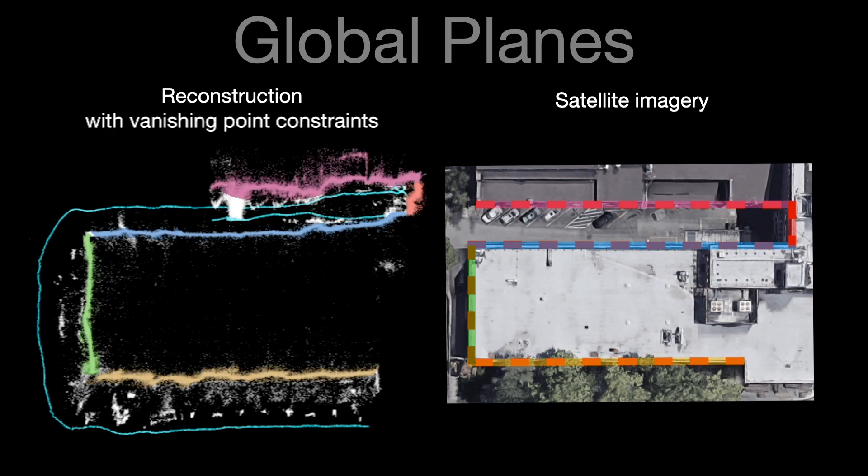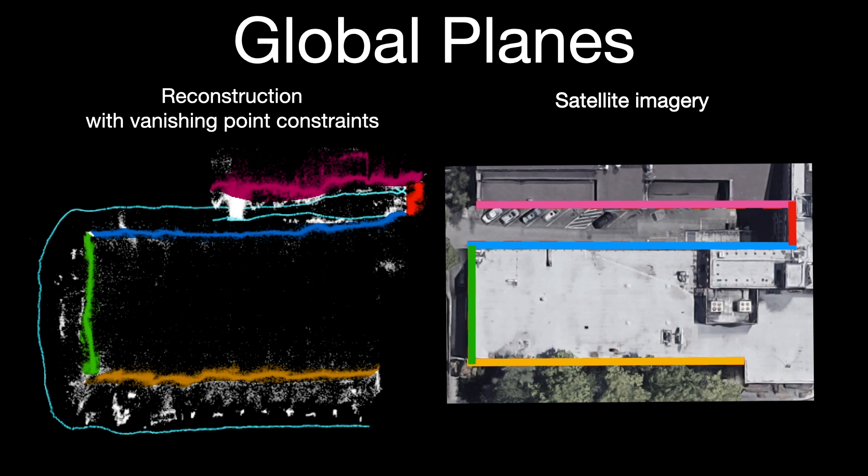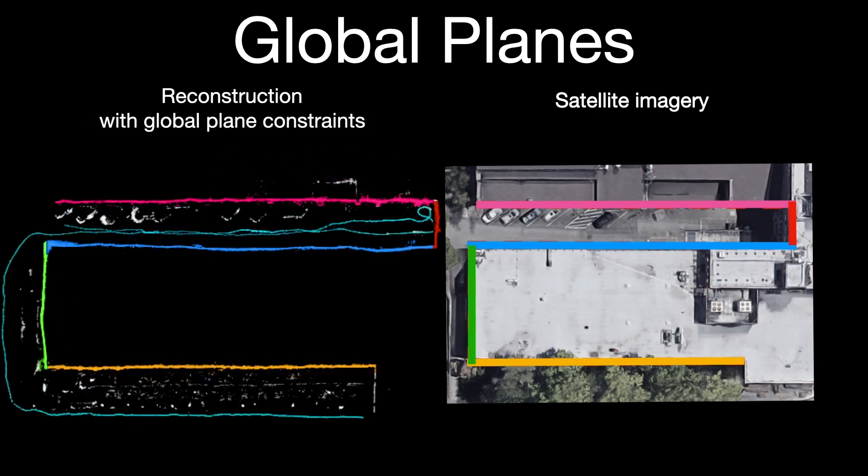For this, we use global planes as our extended features. For each frame in the video, we can identify points which belong to global planes in the scene and use these to constrain the position of the reconstructed camera.